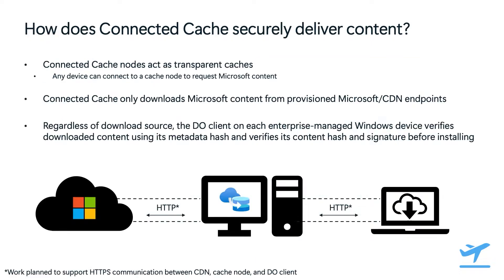Moving on to a frequently asked question from customers: how does Connected Cache securely deliver content? Connected Cache nodes act as transparent caches, and any device can connect to a cache node to request Microsoft content. However, the Connected Cache only downloads Microsoft content from provisioned Microsoft CDN endpoints. Regardless of the download source, the DO client on each enterprise managed Windows device verifies downloaded content using its metadata hash and verifies its content hash and signature before installing the content. We currently use HTTP to communicate between the CDN and the Connected Cache node, as well as between the cache node and the enterprise managed Windows device. We do have work planned to support HTTPS communication.